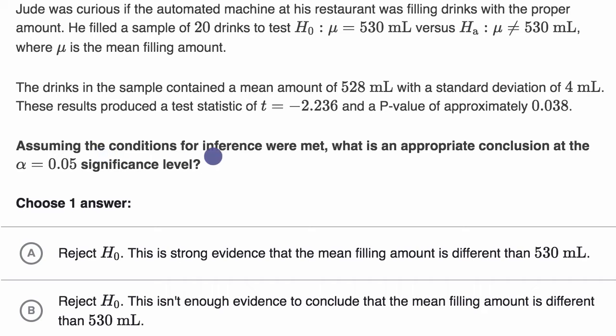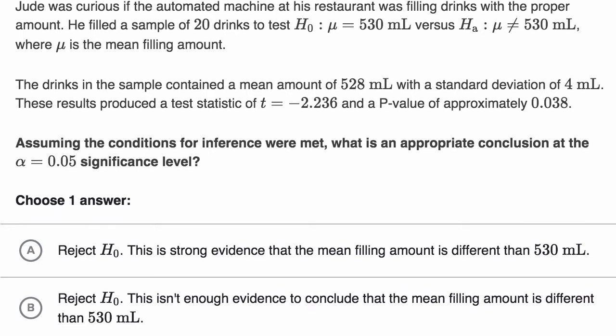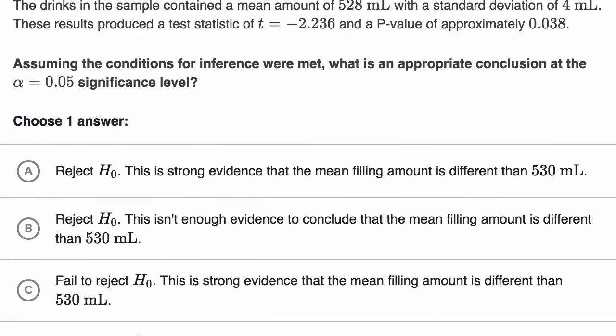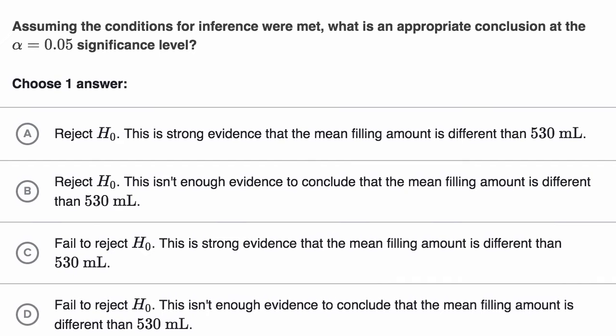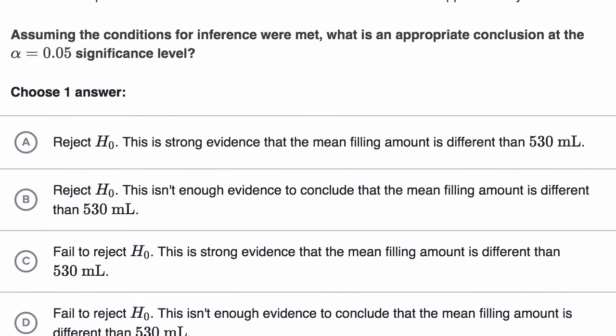Assuming the conditions for inference were met, what is an appropriate conclusion at the alpha equals 0.05 significance level? They give us some choices here. Like always, I encourage you to pause this video and see if you can figure it out on your own.